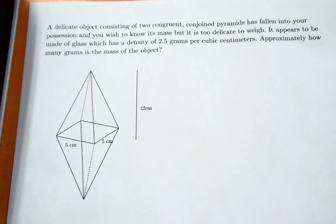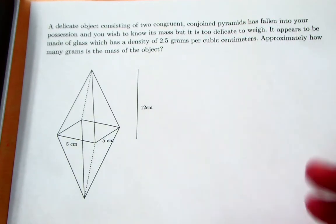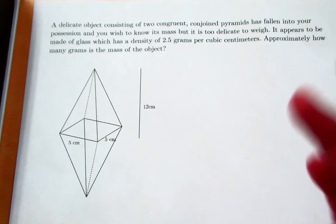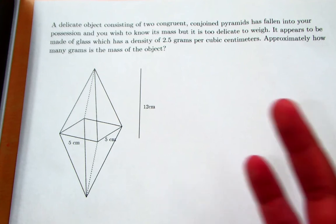So the problem reads: a delicate object consisting of two congruent conjoined pyramids has fallen into your possession, and you wish to know its mass or roughly how much it weighs, but it is too delicate to actually physically weigh.